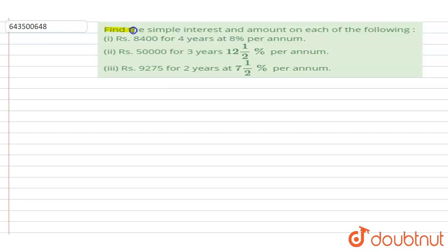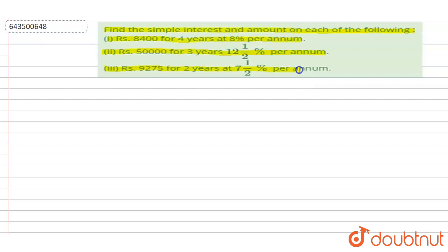Find the simple interest and amount on each of the following: first, rupees 8400 for four years at eight percent per annum; second, rupees 50000 for three years at 12 and a half percent per annum; and third, rupees 9275 for two years at seven and a half percent per annum.